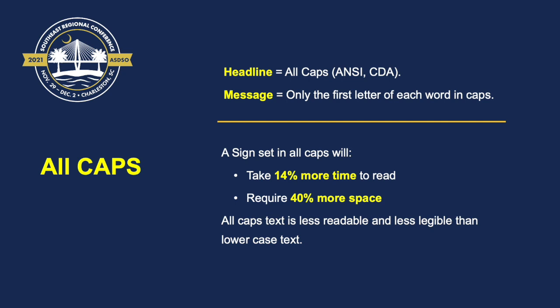All around us we see signs that are all-capitalized. A sign set in all-caps takes 14% more time to read and requires 40% more space, making your signs more expensive. All-caps is less readable and less legible than lowercase text. ANSI and CDA do recognize that capitalized words have a place on a sign — in your headline, the signal word can be all-caps. However, the message text should have only the first letter of each word in caps; the rest should be lowercase.